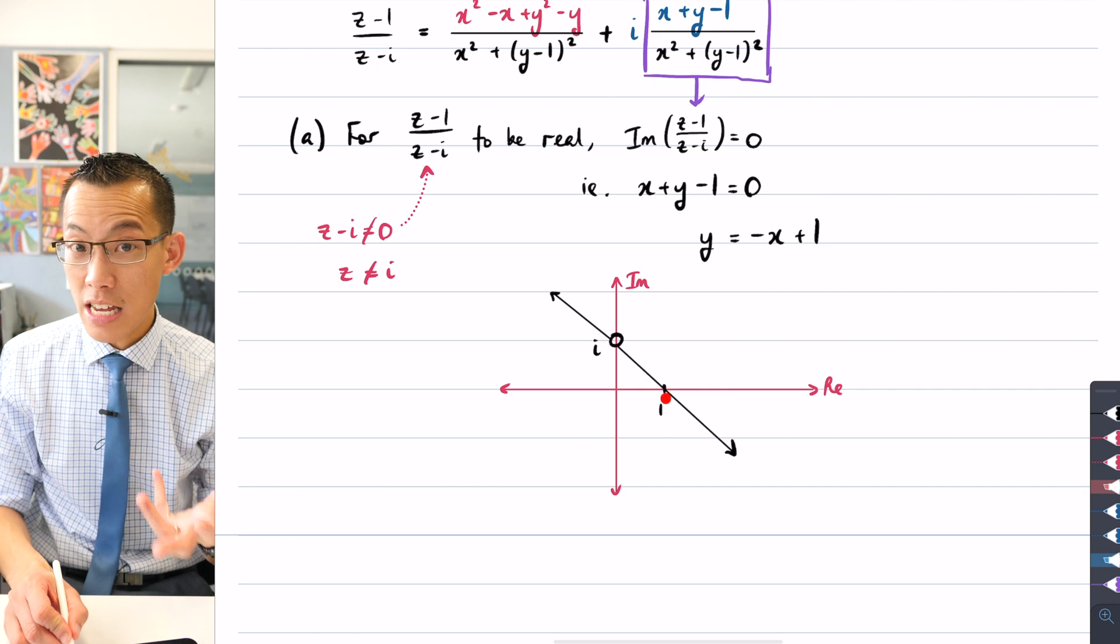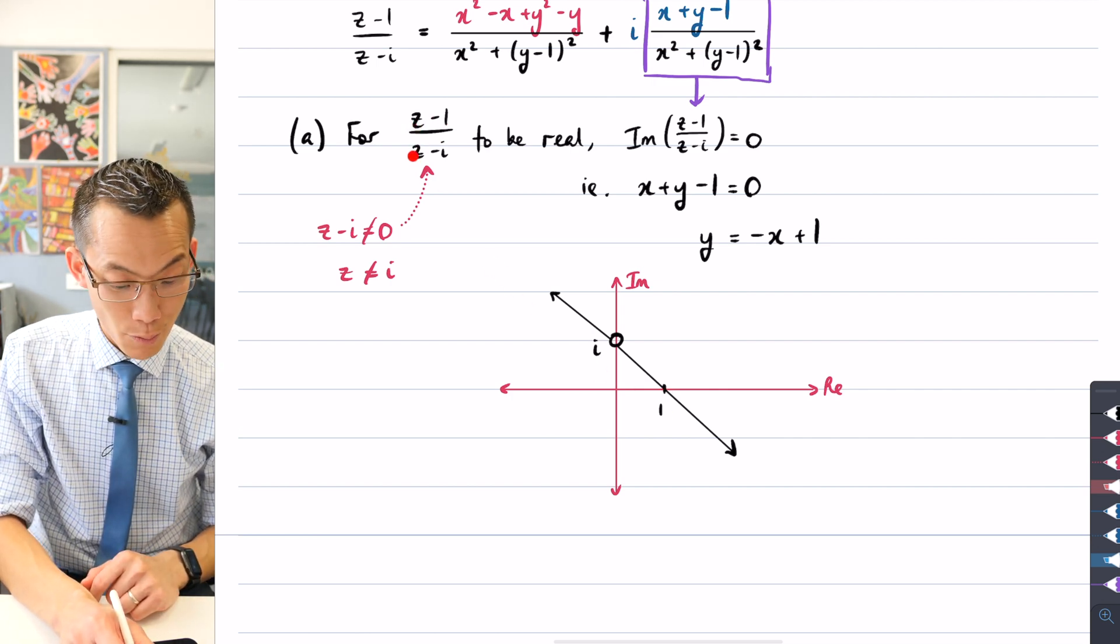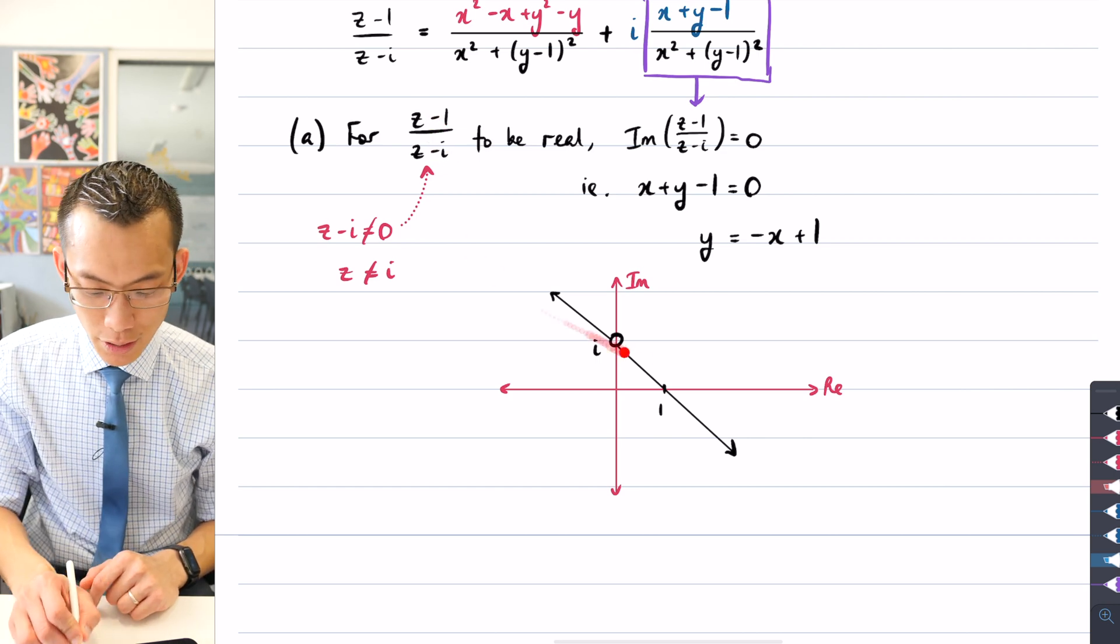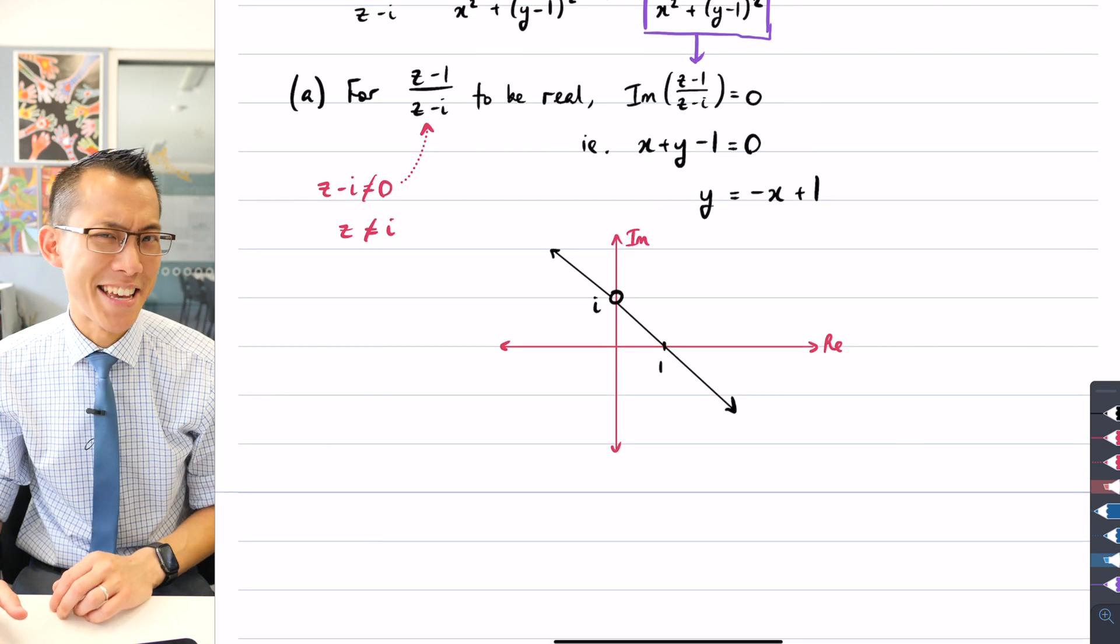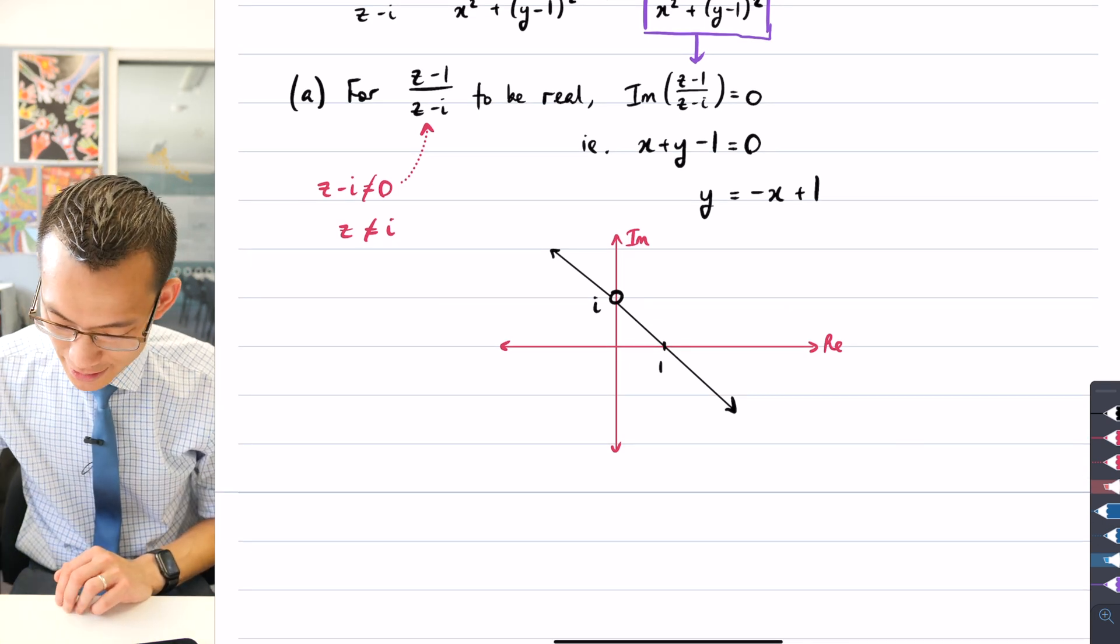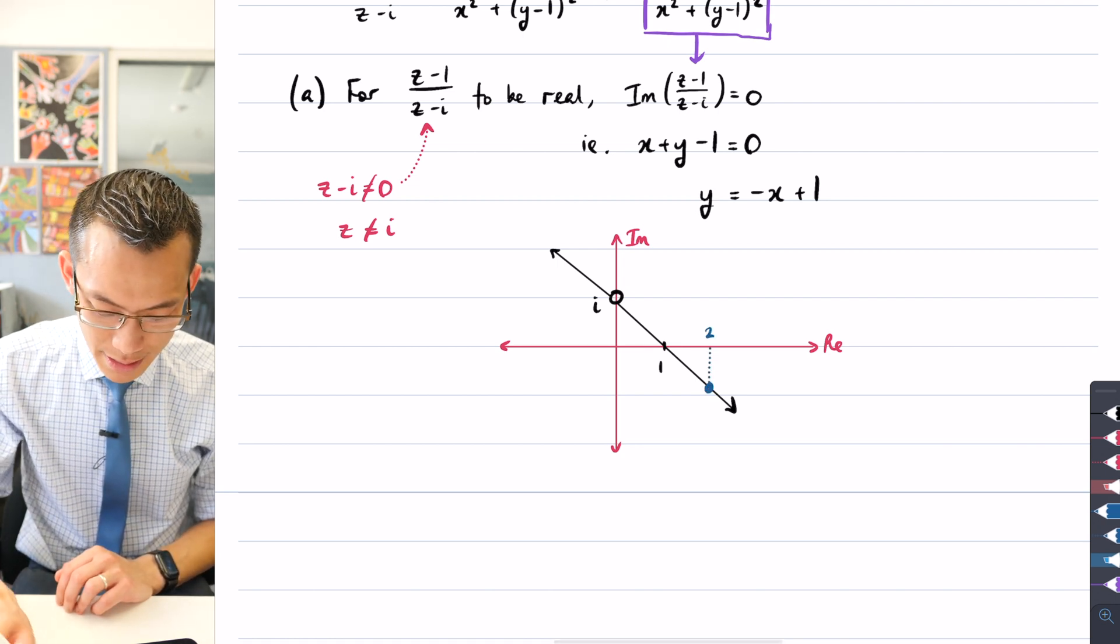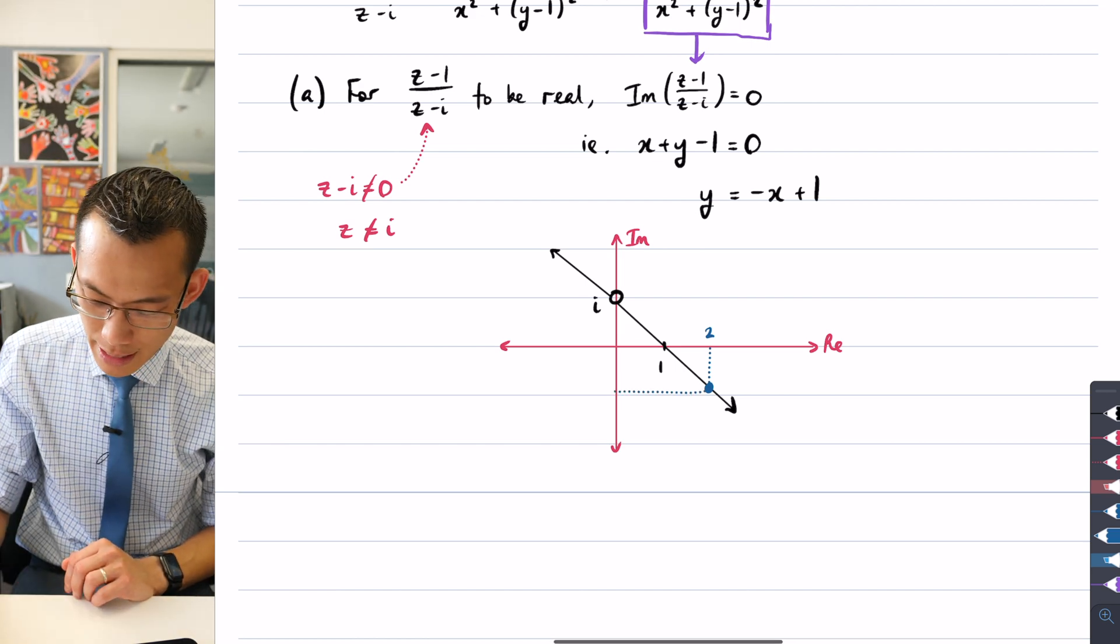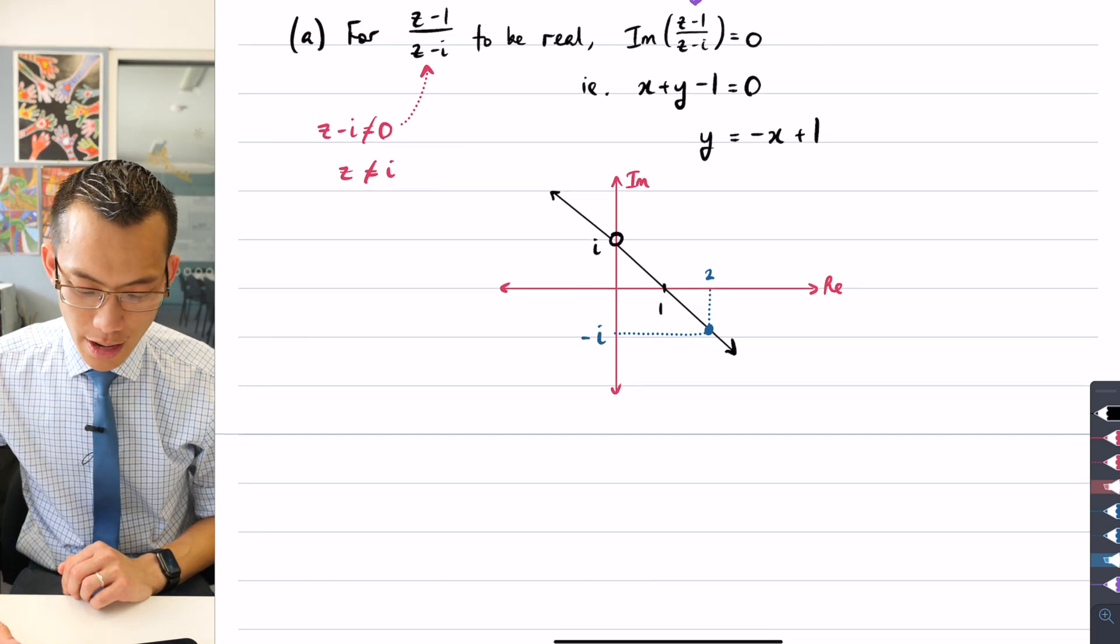You can test this locus out. If you put in a spot like z equals 1, you get 1 take away 1 over 1 take away i. You get 0 on the numerator, so therefore 0, is that a real number? Yes it is. You can test some less trivial numbers if you want. For example, if we go over to here, so I'm going to call that 2, this down here means if you have a look across, because we know the gradient is negative 1, that should be negative i down there.